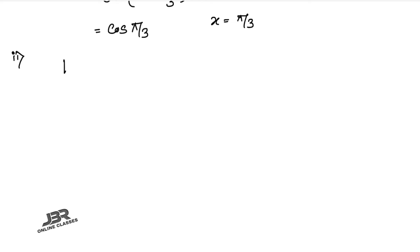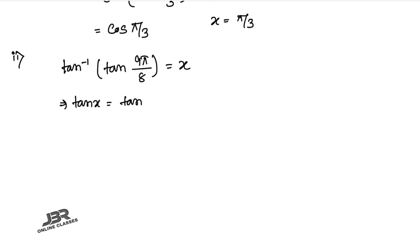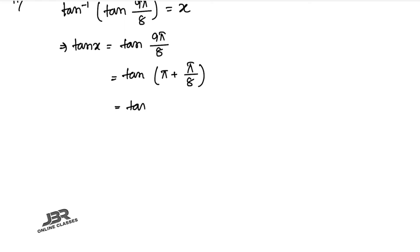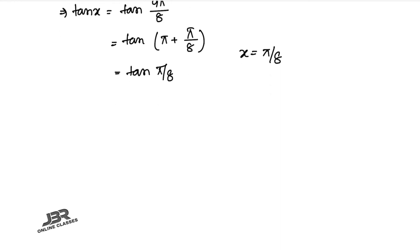Sum number 6.2: tan⁻¹(tan(9π/8)) = x, so tan x = tan(9π/8). Writing 9π/8 = π + π/8 and using tan(π + θ) = tan(θ), we get tan(π/8). Therefore x = π/8.